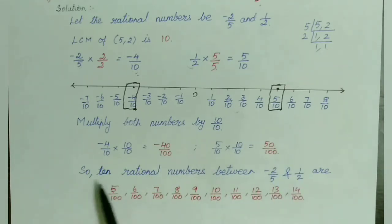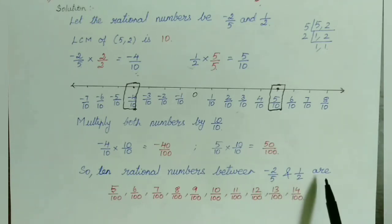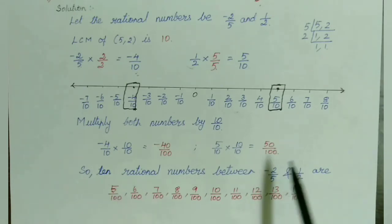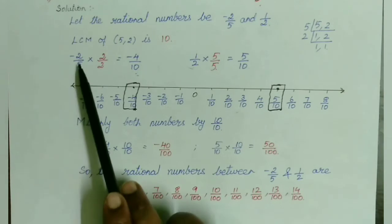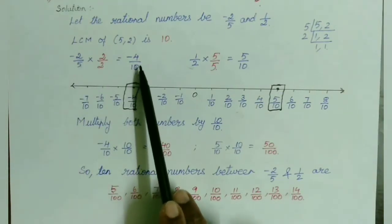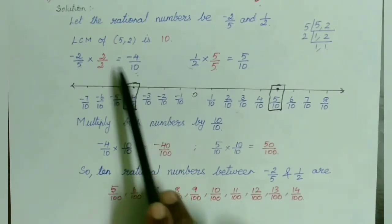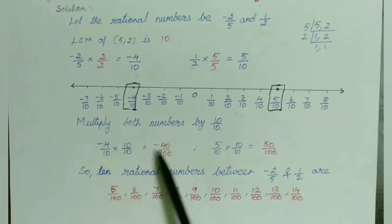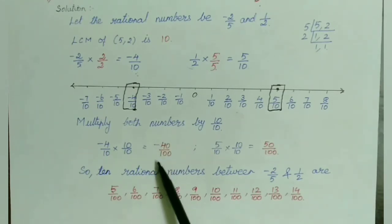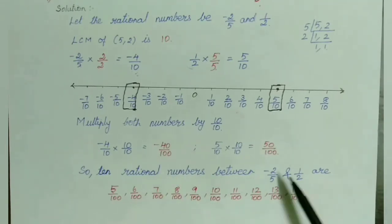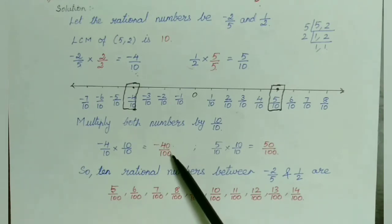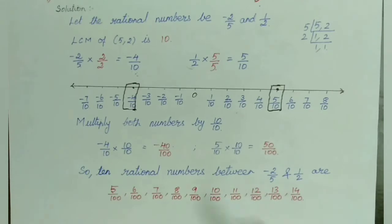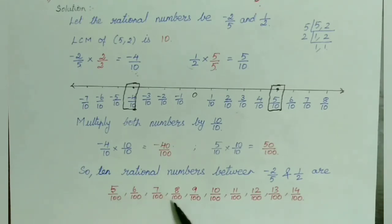So I'm going to write 10 rational numbers between minus 2/5 and 1/2. Note that minus 2/5 has been transformed to minus 4/10 and then to minus 40/100 — these are all equivalent rational numbers. The 10 rational numbers between minus 2/5 and 1/2 are: minus 5/100, minus 6/100 — wait, they are minus 39/100, minus 38/100... Actually: the numbers are 5/100, 6/100, 7/100, up to 14/100 — giving us 10 rational numbers in between.